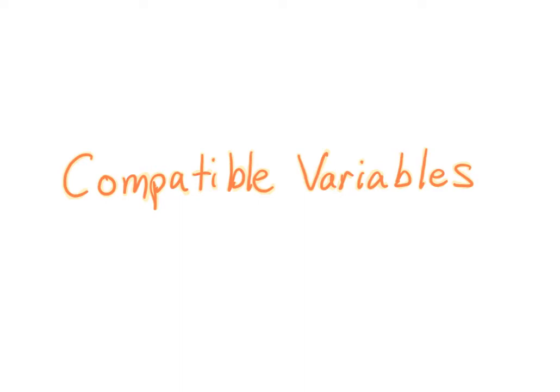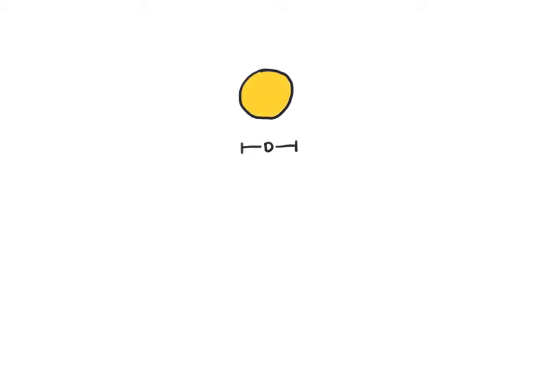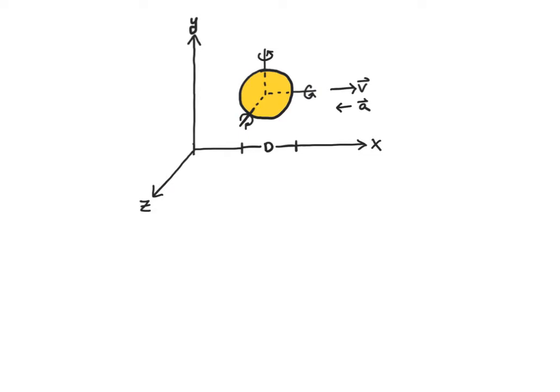Today we're going to talk about the concept of compatibility, which is the property of a system where multiple pieces of information can be known or well-defined simultaneously. In order to illustrate this, let's first take an example from classical mechanics. Let's talk about a ball that is rolling or sliding or otherwise moving through space. We can characterize the state of this ball through lots of different pieces of information: its size, color, position, velocity, acceleration — each along x, y, and z axes. We can also describe how the ball is spinning around each of these three axes, and we can know each of these things simultaneously.